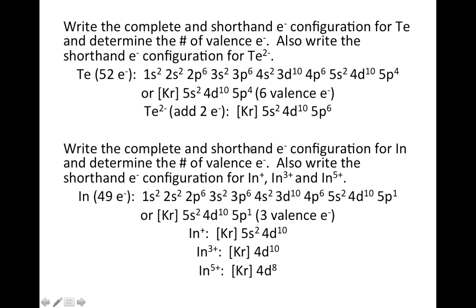Okay, so let's end quickly with a couple more examples, one anion and one involving cations. We're going to do the shorthand and complete electron configurations. We're going to determine the number of valence electrons, and then write the shorthand configuration for either positive or negative ions.